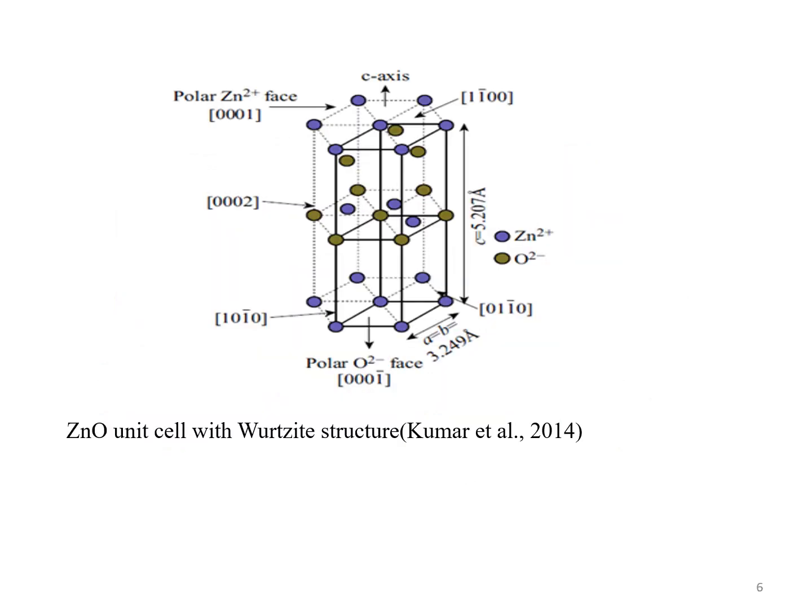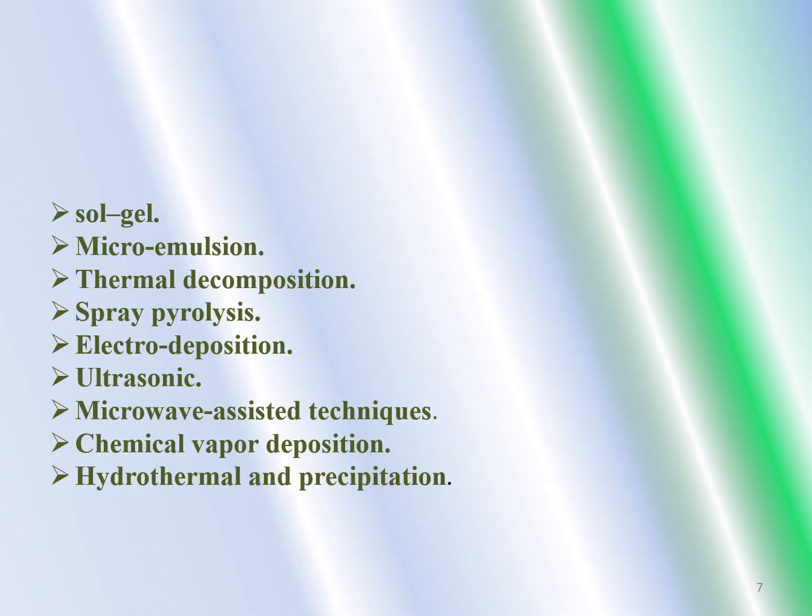The parameters of ZnO in hexagonal structure are a equals b equals 3.249 angstrom and c equals 5.207 angstrom. To obtain high-quality ZnO nanoparticles, varieties of techniques have been used such as sol-gel, micro-emulsion, thermal decomposition, spray pyrolysis, electro-deposition...